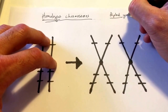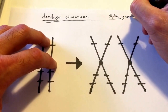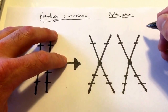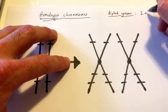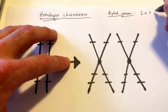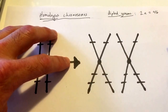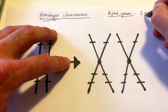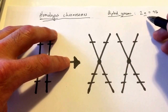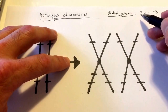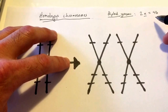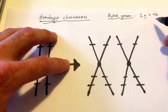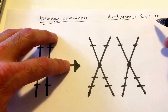Our diploid genome we can describe with a number: 2n equals 46, where n equals the number of chromosomes in a set. We receive 1n equals 23 chromosomes from mom, and we inherit 23 chromosomes from dad.